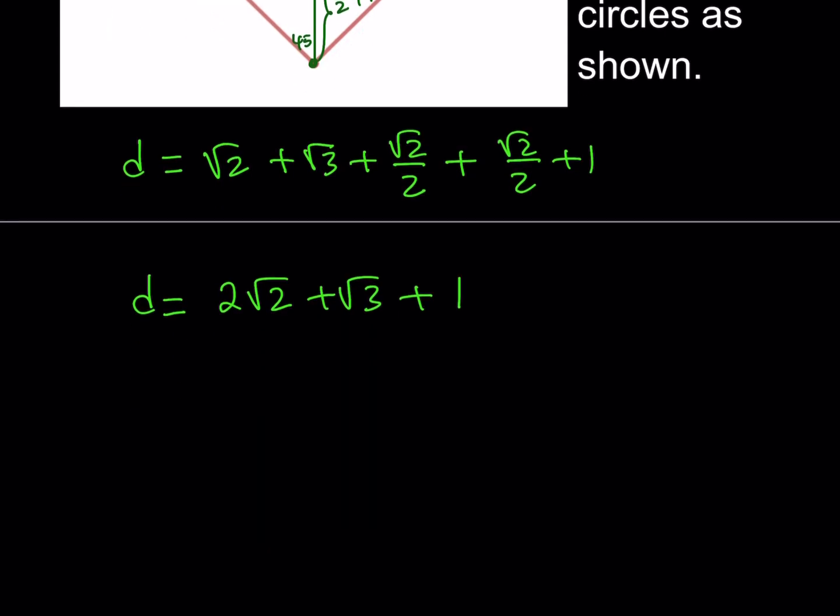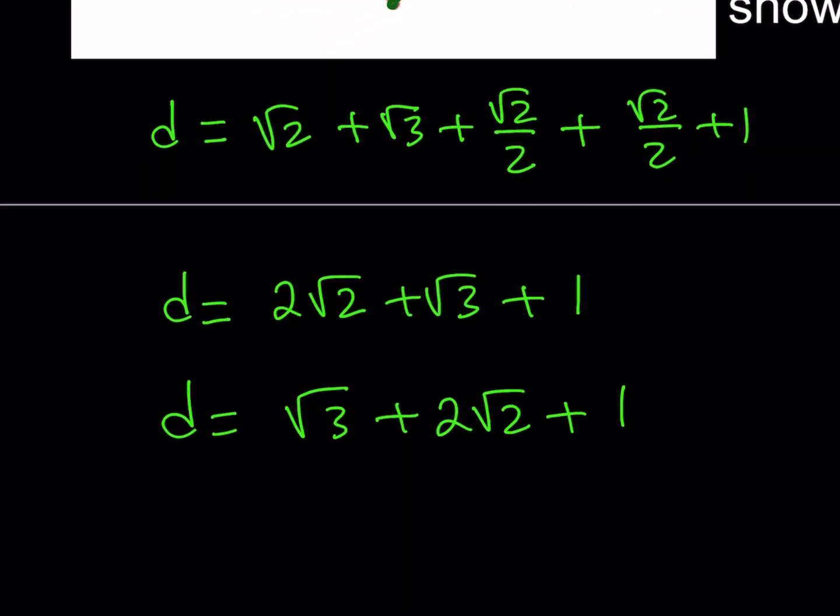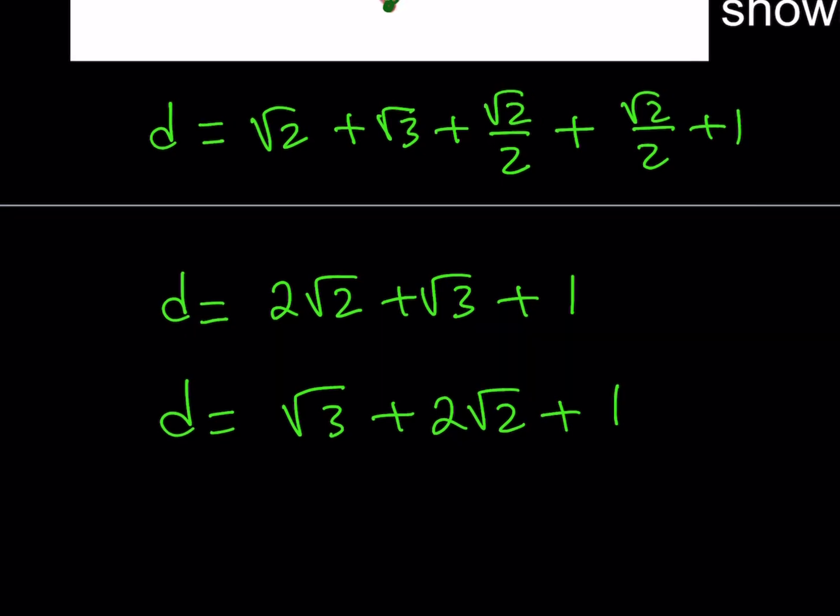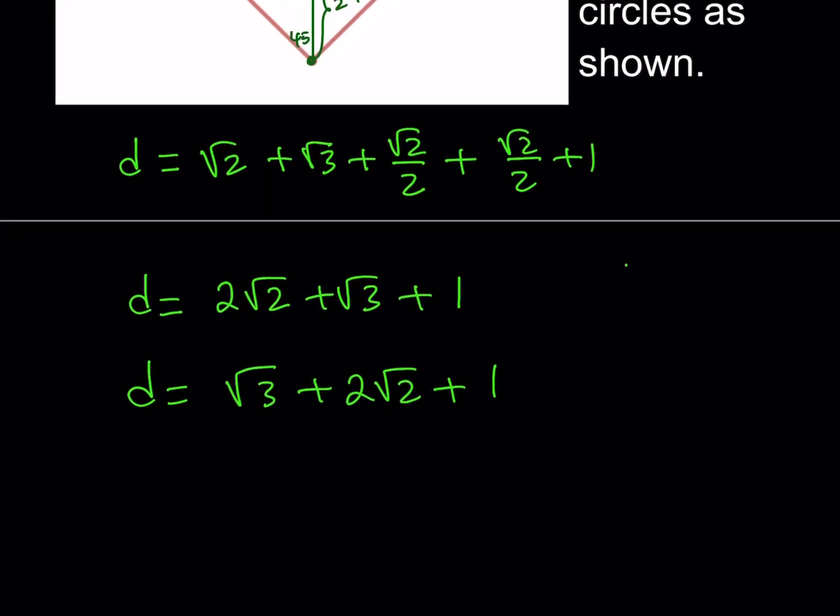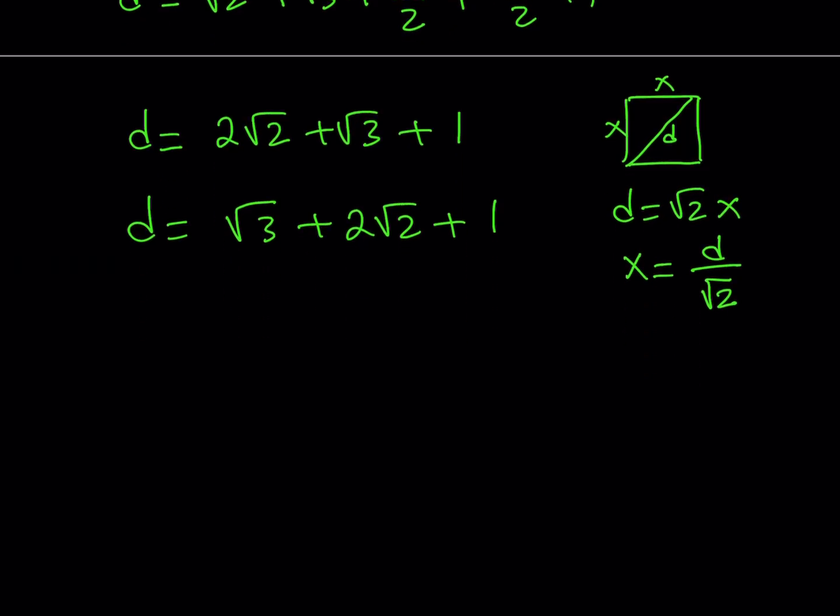So this is the diagonal of our square whose side length we're trying to find. Now, what's the relationship between the diagonal of a square and its side length? Let's call the side length x here. We know that from 45, 45, 90 triangle that the diagonal is going to be root 2 times the side length. But we're trying to find the side length. Therefore, the side length is going to be the diagonal divided by square root of 2. So to find the side length for the square, then what we need to do is take the diagonal and we call that x. Take the diagonal root 3 plus 2 root 2 plus 1 and divide it by root 2. That's all you have to do.